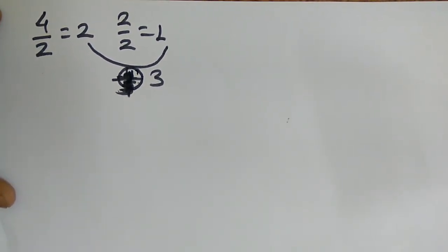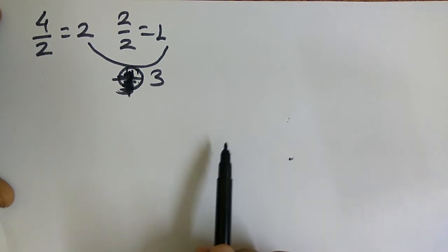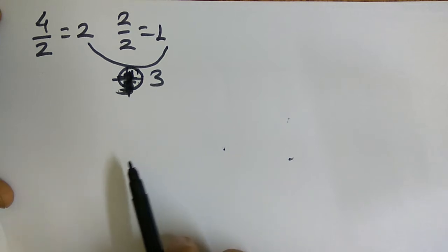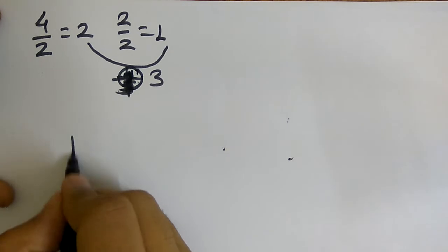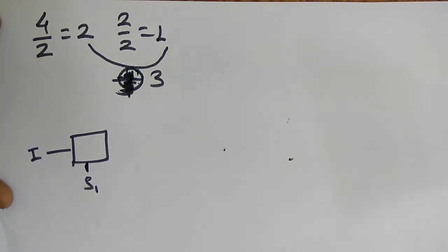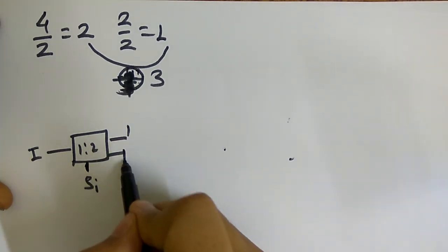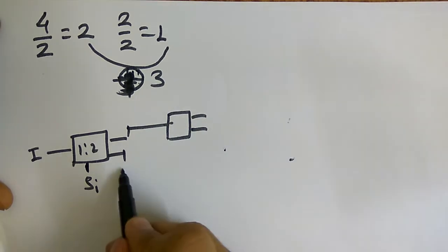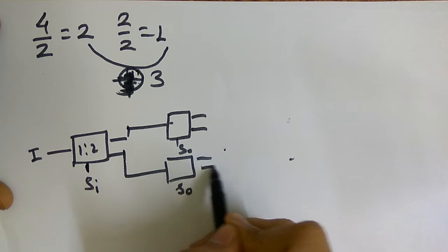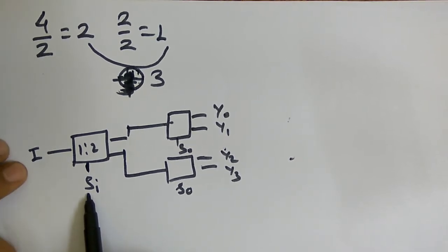We follow the reverse procedure compared to MUX — in MUX we had many inputs to convert into one, but here we have one input and we give it to many outputs. So we take a 1-to-2 DEMUX first using MSB select line, then connect two more 1-to-2 DEMUX blocks. The select lines are S1 for the first stage and S0 for the second stage, giving outputs Y0, Y1, Y2, Y3.